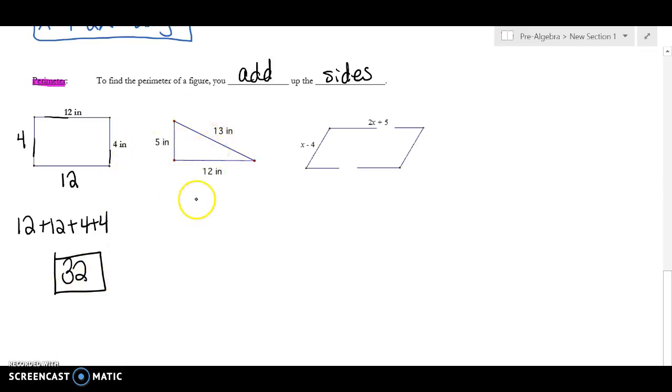Here again, I add up all my sides. So I have a 12, a 13, and a 5. And so that's 30.